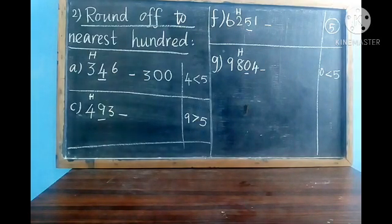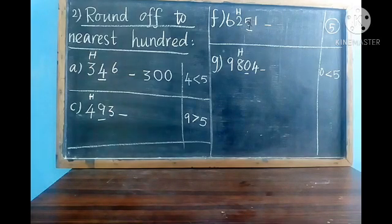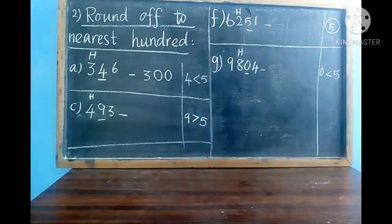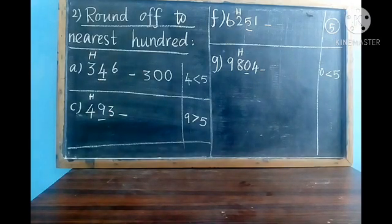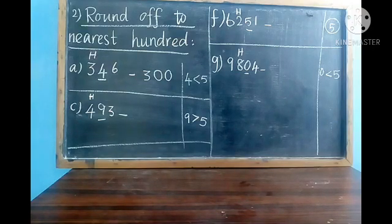We round off to nearest hundred, so I have written H above 3. The next digit is the tens place — 4 is underlined. The underlined digit 4 is less than 5, so to write the nearest hundred we write 3 as it is, and in the tens place we write 0.